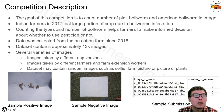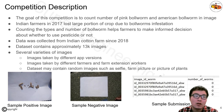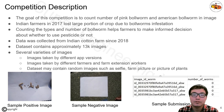There are several varieties of images — images will be taken by different app versions, different farmers, and different mobile phones. The dataset may contain random images such as selfies, farm pictures, or pictures of plants. So our model has to output zero counts in such cases.